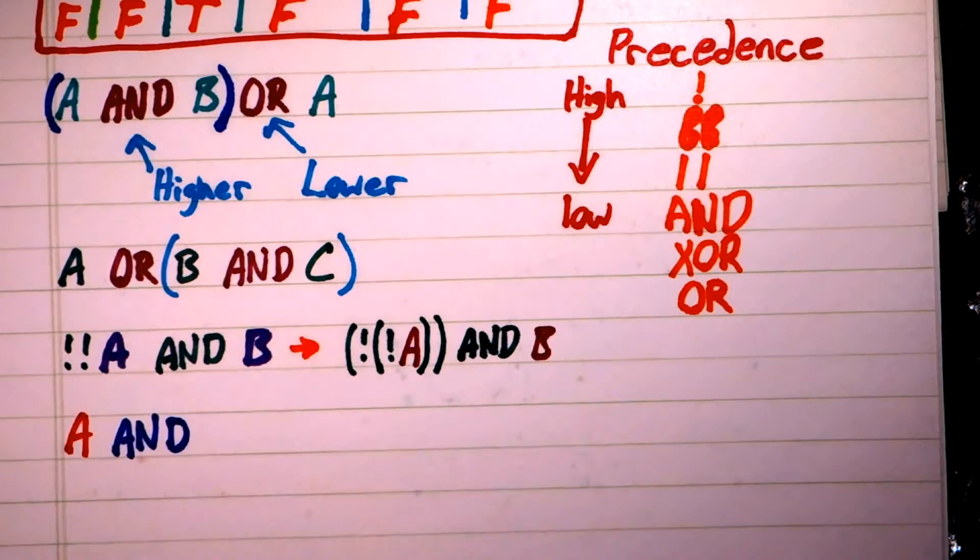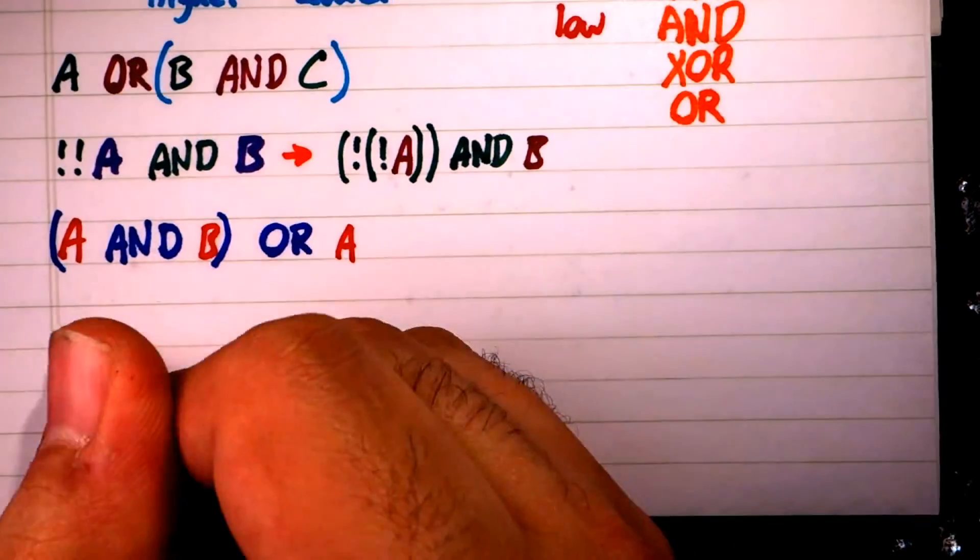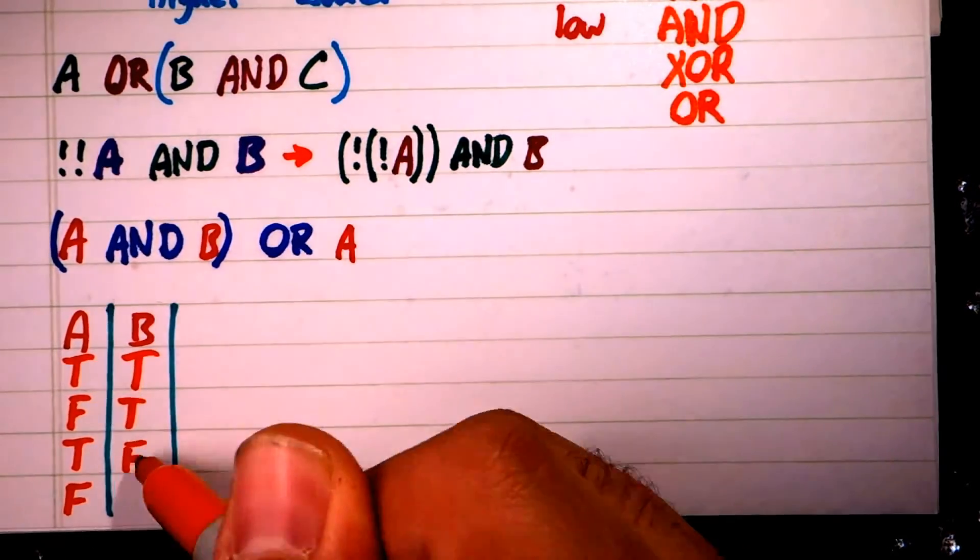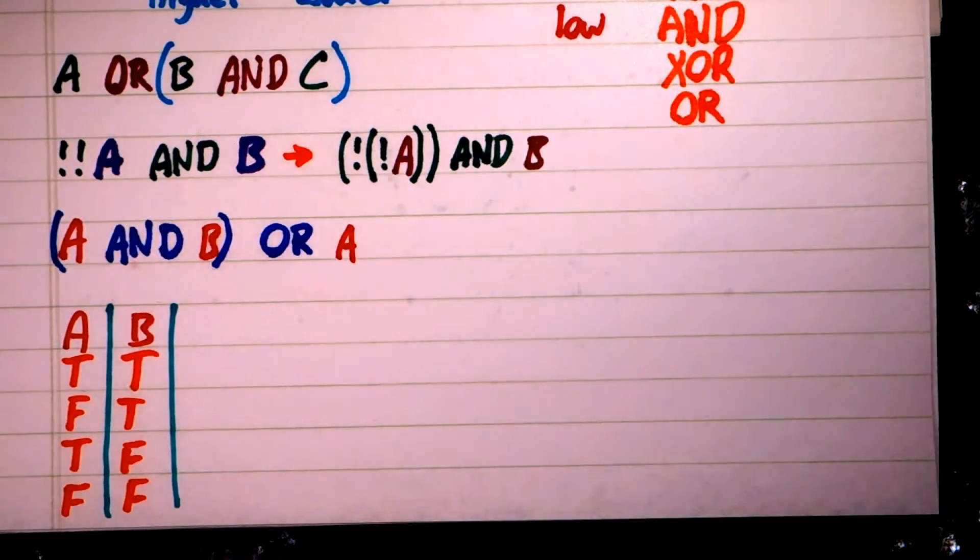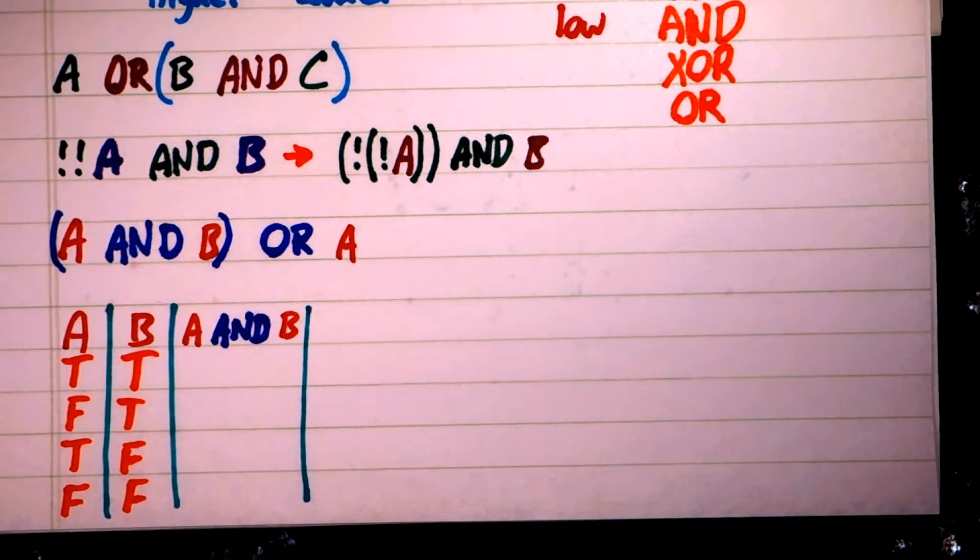Now let's look at A AND B OR A. To see how this will result, let's create a truth table and populate it step by step. First, we evaluate the innermost logical element. So let's compute A AND B.